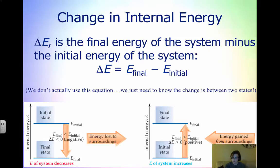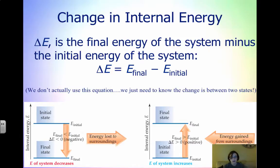We don't actually use this equation much — it's just important to know that the change is between the two states. Delta E is determined experimentally, so we actually have to find delta E in a lab. Delta E is called a thermodynamic quantity. Thermodynamic quantities have three parts: a number, a unit, and a sign. The number gives us the value, the unit gives us the magnitude, and the sign tells us the direction.